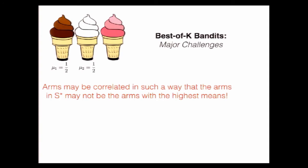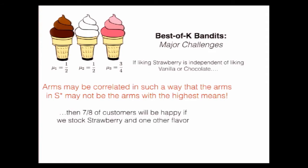I'll walk you guys through a very simple example. Suppose half of people like chocolate and half of people like vanilla, but now three-quarters of people like strawberry. If liking strawberry is independent of chocolate and vanilla, then you'll find that seven-eighths of customers are happy if you stock strawberry in another flavor.